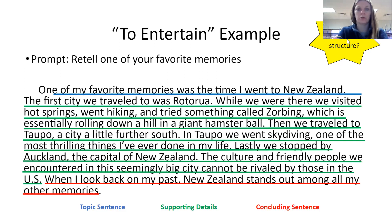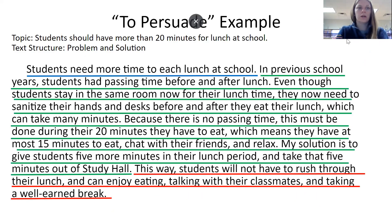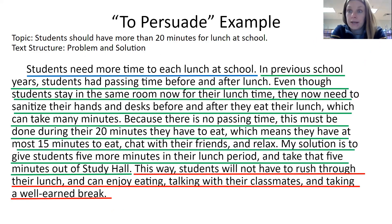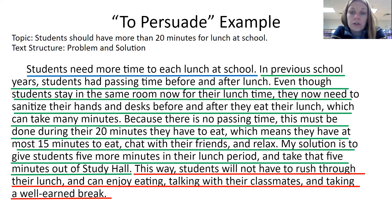And then we're going to do a to persuade example. This one already has the topic sentence, the details, and the concluding sentence highlighted. The topic and main idea is: students should have more than 20 minutes for lunch at school. The text structure is problem and solution. Students need more time to eat lunch at school — that's the topic sentence. In previous school years, students had passing time before and after lunch. Even though students stay in the same room now for their lunchtime, they need to sanitize their hands and desks before and after they eat, which can take many minutes. Because there is no passing time, this must be done during the 20 minutes they have to eat, which means they have at most 15 minutes to eat, chat with their friends, and relax. My solution is to give students five more minutes in their lunch period and take that five minutes out of study hall. This way, students will not have to rush through their lunch and can enjoy eating, talking with their classmates, and taking a well-earned break.